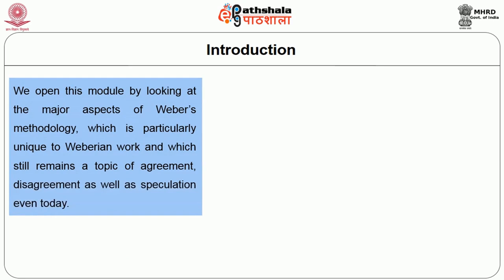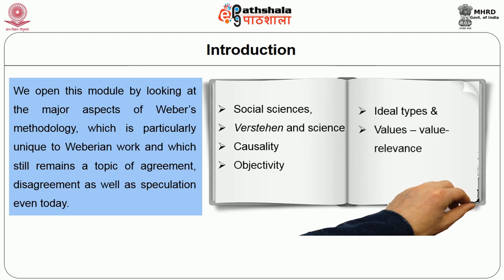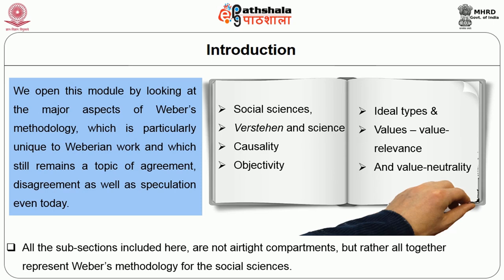This module examines the major aspects of Weber's methodology, which is particularly unique to Weberian work and which remains a topic of agreement, disagreement, and speculation even today. We will be examining the following: historical background for Weber's views and methodological issues in social sciences, Verstehen and science, causality, objectivity, ideal types and values, value relevance and value neutrality. All these subsections together represent Weber's methodology for the social sciences.